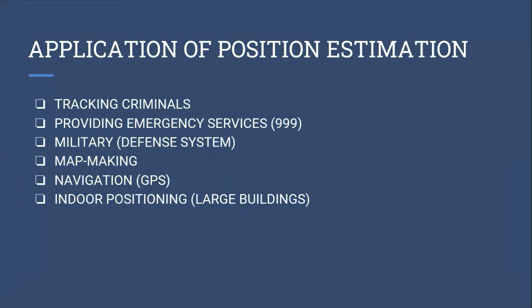The application of position estimation — basically, position estimation is used to save time. For example, in hospitals, we use position estimation to track patients wherever they are. It is also used to track criminals, provide emergency services such as 999 in Malaysia, support military defense systems, map making, navigation using global positioning system, indoor positioning in large buildings, and to track items in wide warehouses.